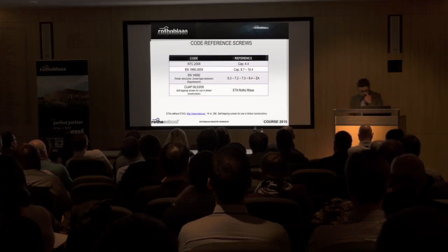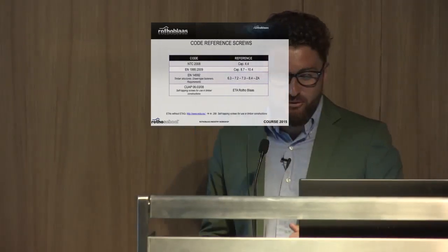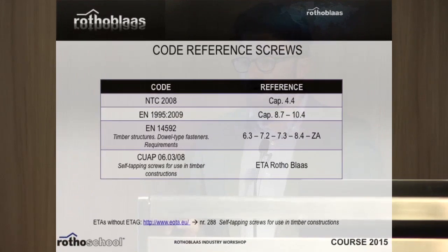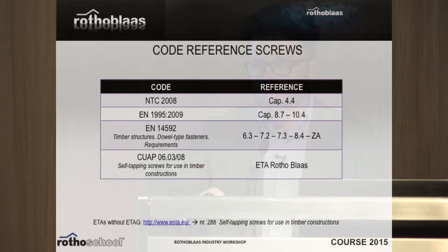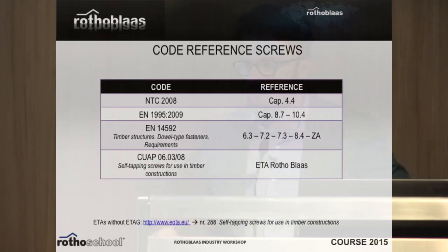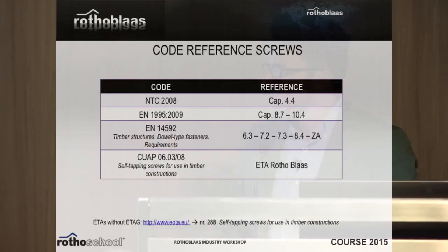Now for the calculation of screws. Regarding the code: the first is the Italian code, which gives you the factor to pass from characteristic values to design values — this is general and not specific to timber. The code for screws is basically Eurocode 5, which covers both timber and connectors and contains all the rules.